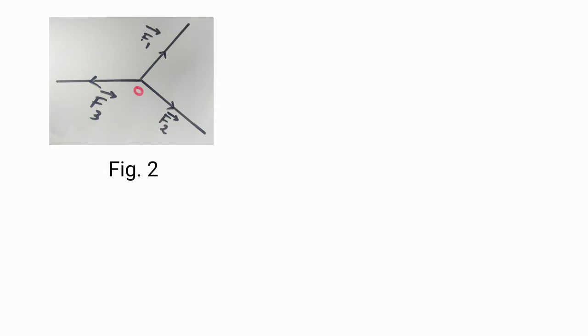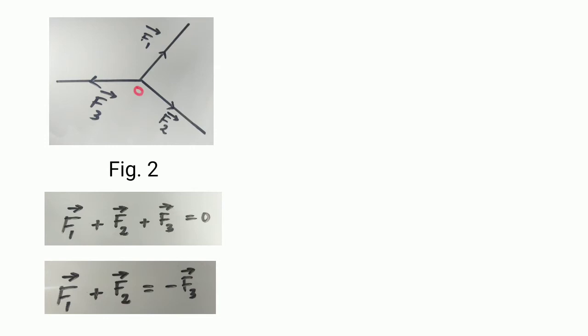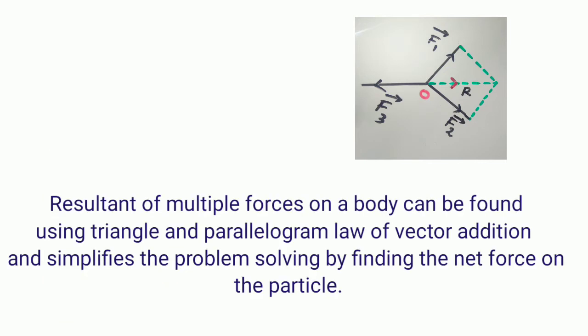Similarly, let us find the equilibrium condition for three forces as in Figure 2. For three forces F1 vector, F2 vector, and F3 vector, the equilibrium condition is their vector sum equals zero: F1 vector plus F2 vector plus F3 vector equals zero. That gives F1 plus F2 equals minus F3. So F3 vector must be equal and opposite to the resultant R vector of F1 and F2, as shown in Figure 3. To find the resultant force, we use triangle law of vector addition, parallelogram law of vector addition, and polygon law of vector addition.